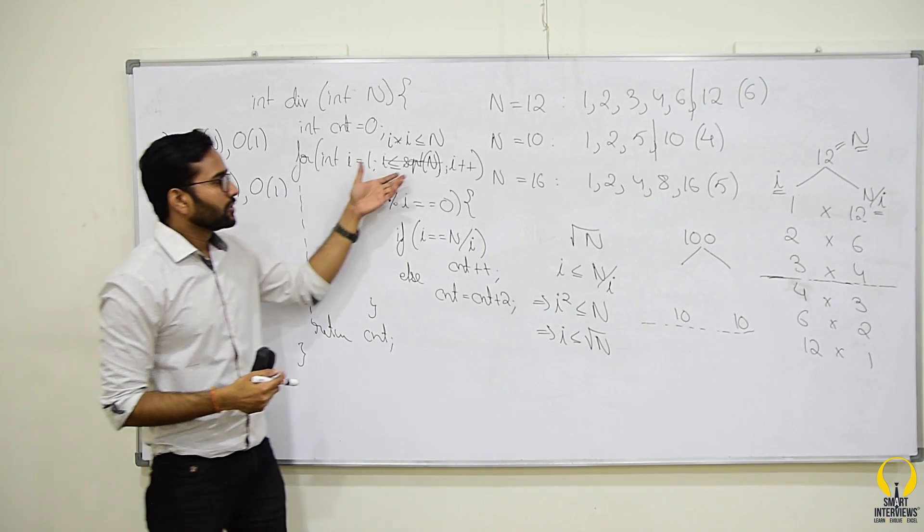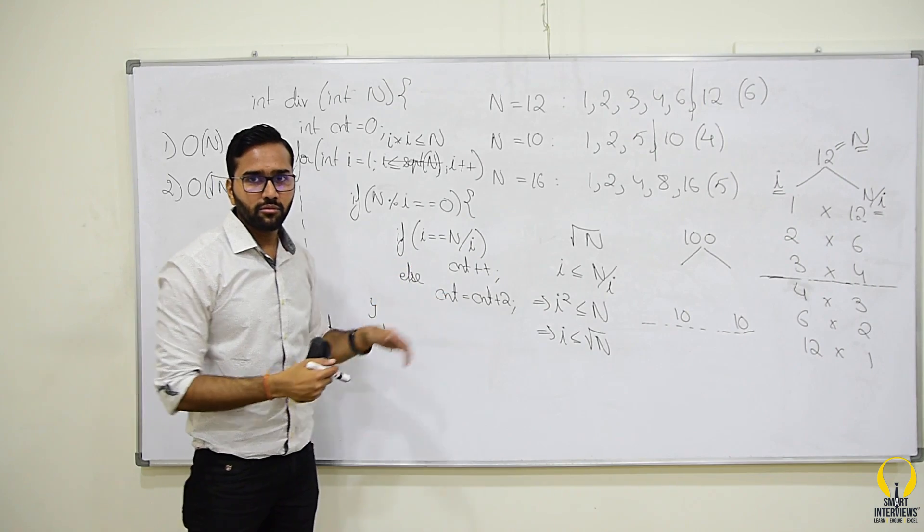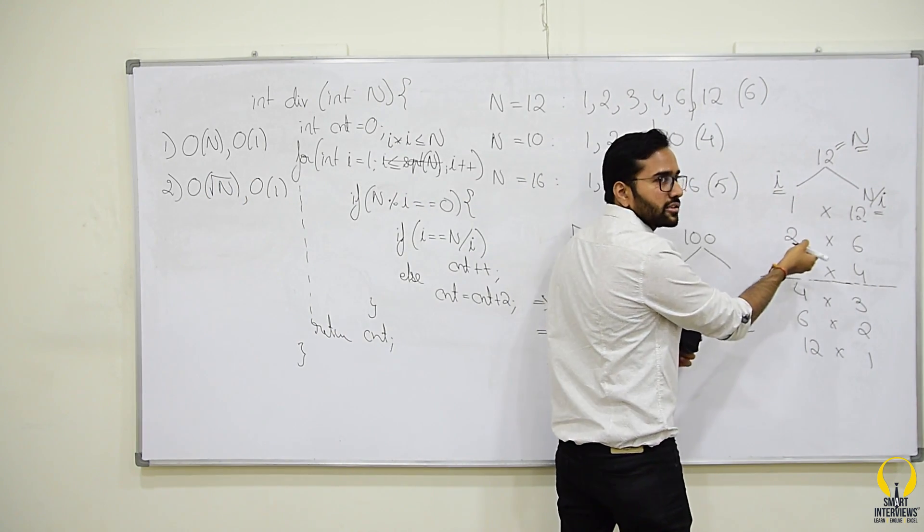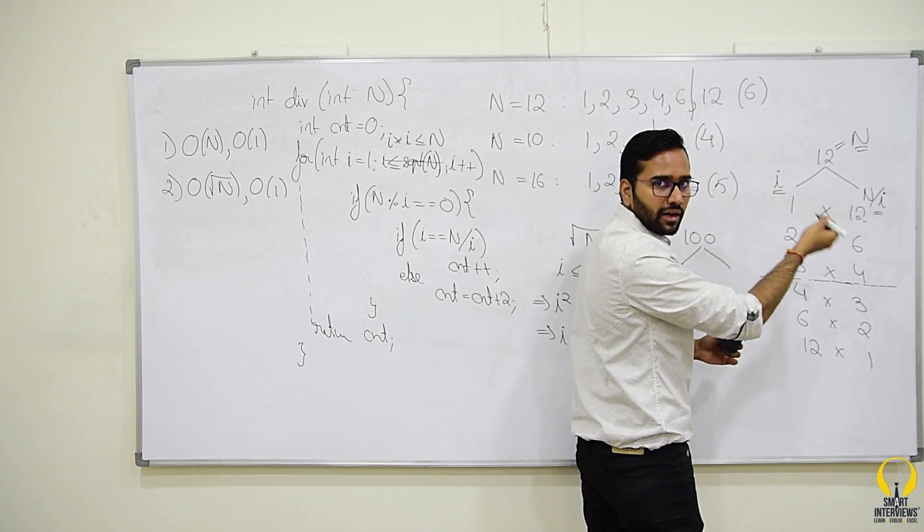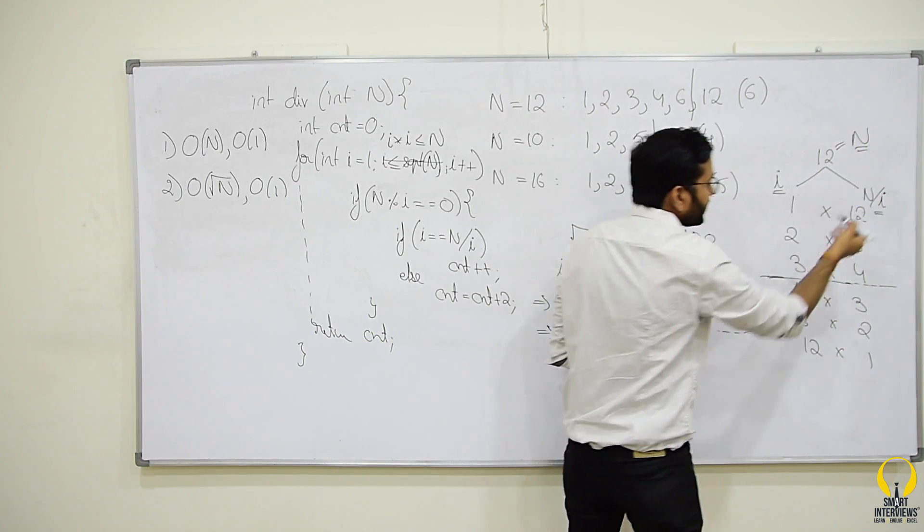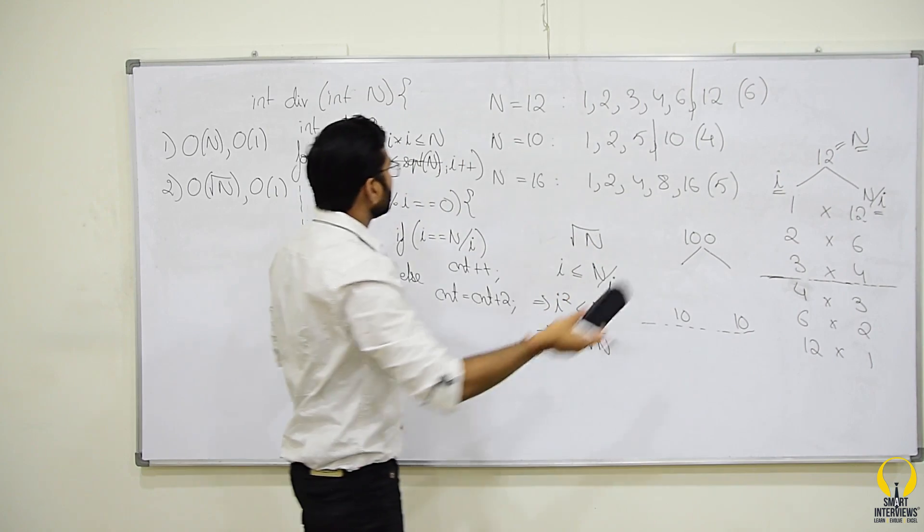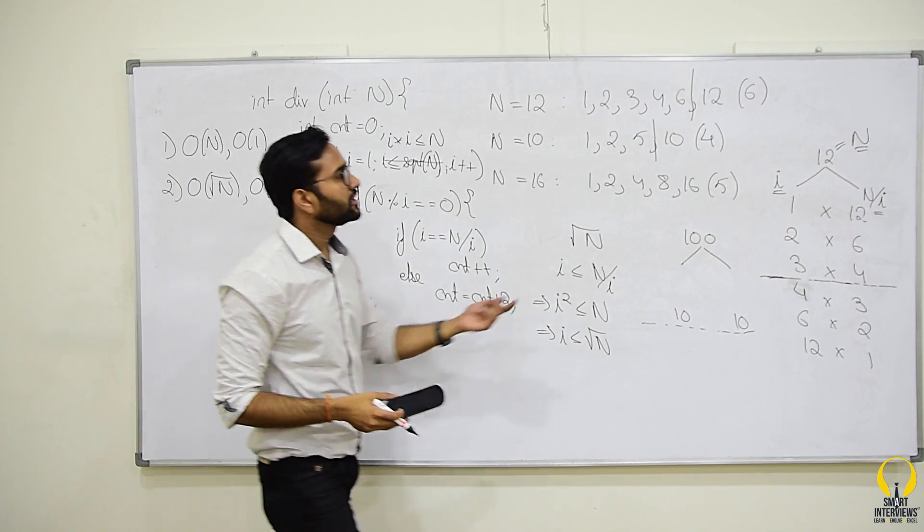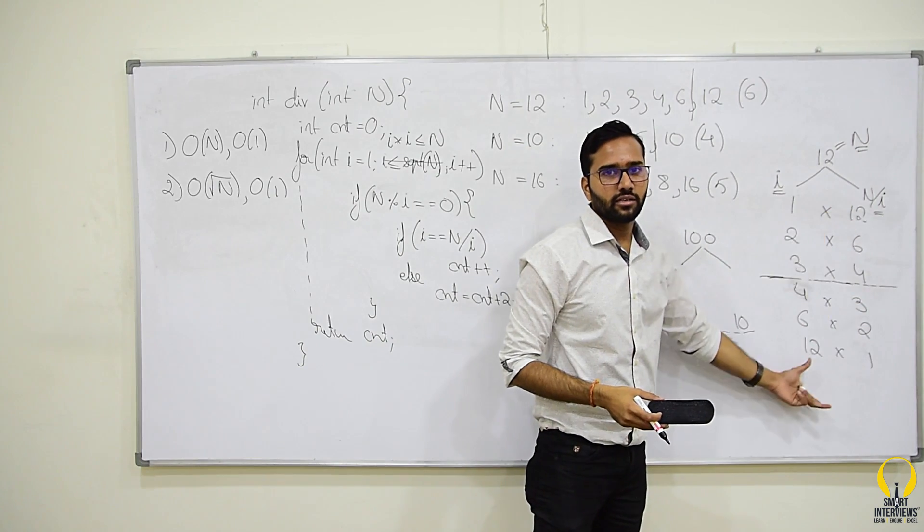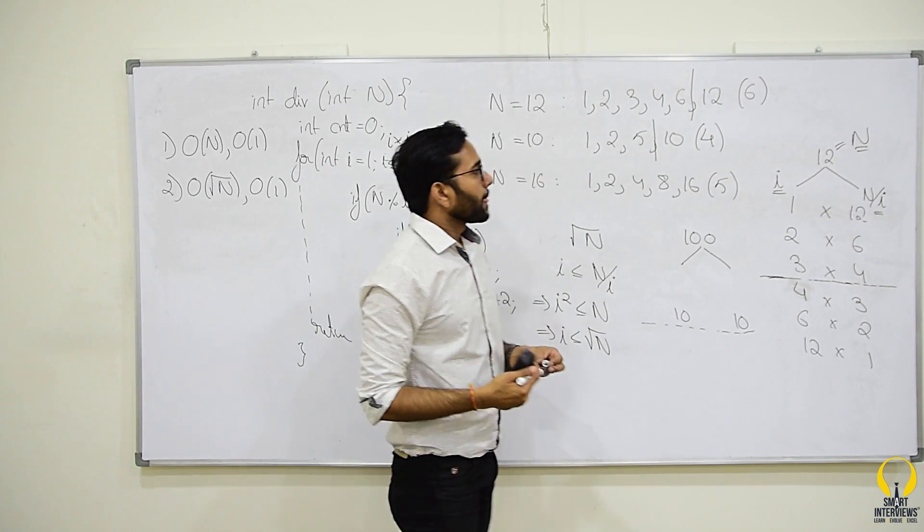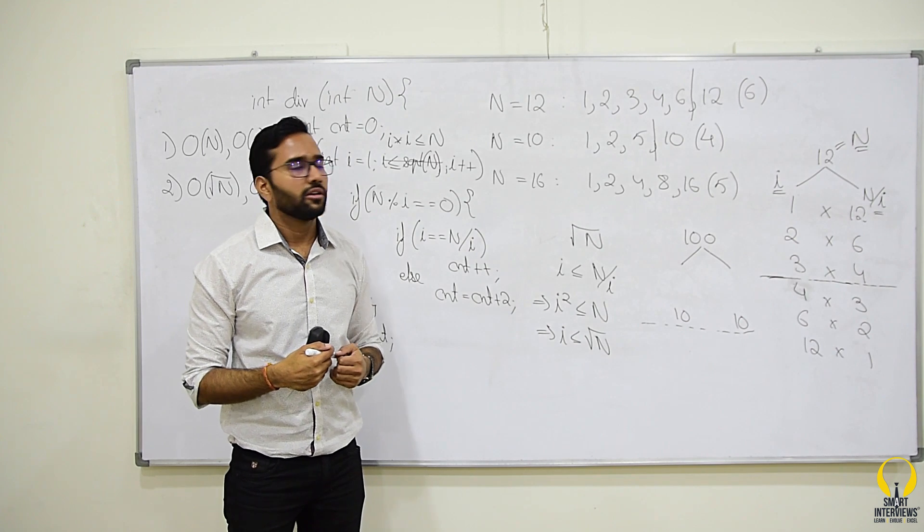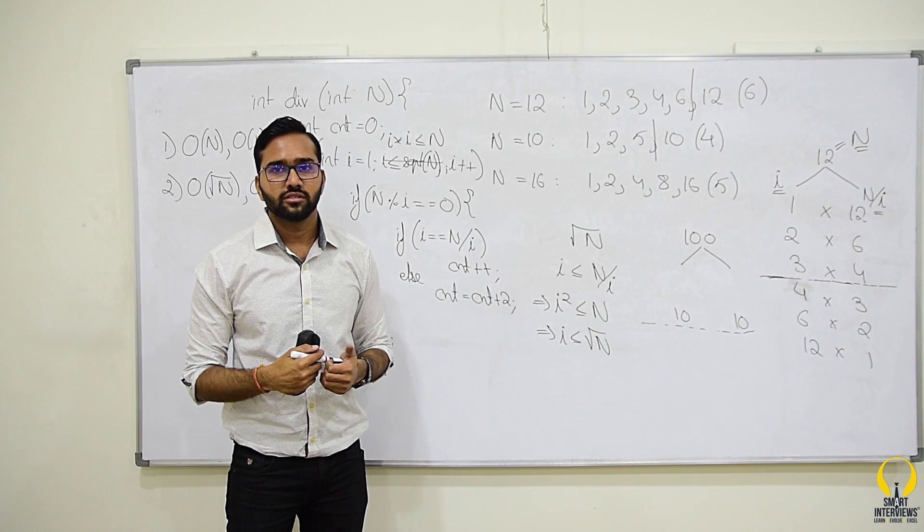So, we were able to optimize this problem with a simple observation that if i is a divisor, the quotient which is n/i is also a divisor. So, in this problem, we are not using any data structures, we are not using any algorithms. We are using basic mathematical concepts. Thank you for watching this video. Make sure you check out our website for the list of upcoming courses. Thank you.